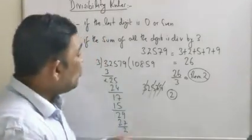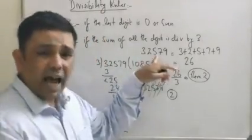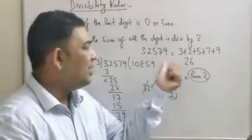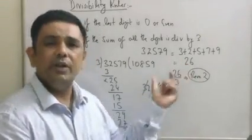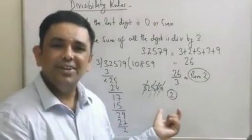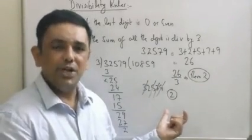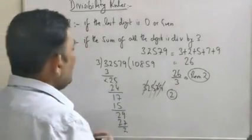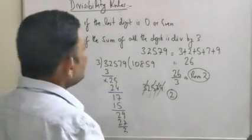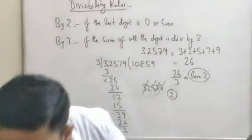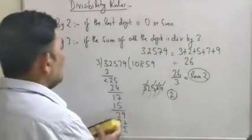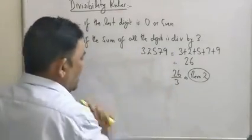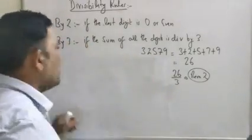Is the divisibility rule the same as this? Absolutely. But when it comes to actually solving it, we will use the shortcut. So to summarize: a number is divisible by three if the sum of all the digits is divisible by three.